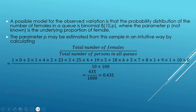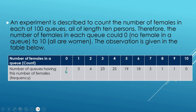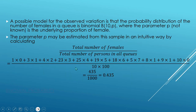The parameter p can be estimated from the sample by calculating the total number of females divided by the total number of persons in all queues. We multiply each count of females by the number of queues (e.g., 1×0, 3×1, 4×2, etc.) and divide by the total number of persons, which is 10×100 = 1000. This gives p̂ = 0.435. So the underlying proportion of females is 0.435.